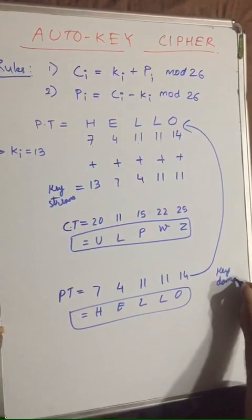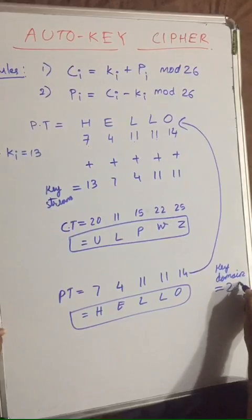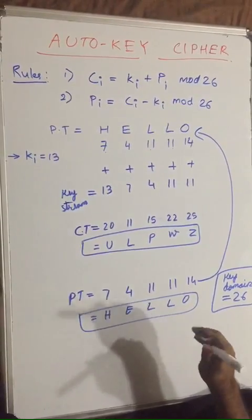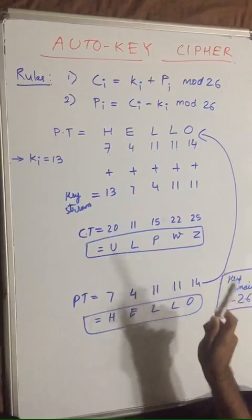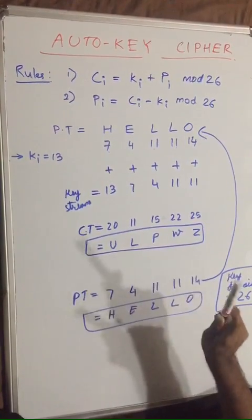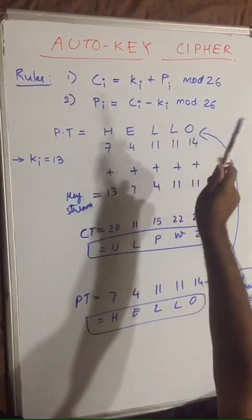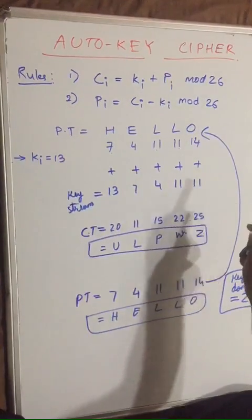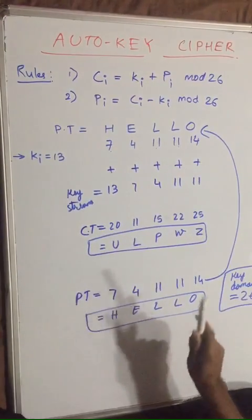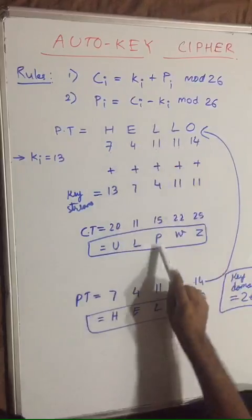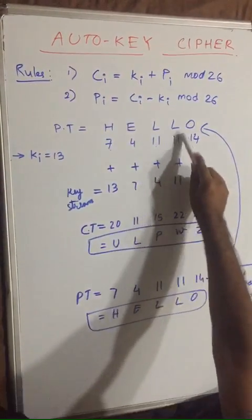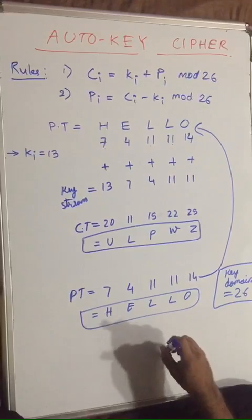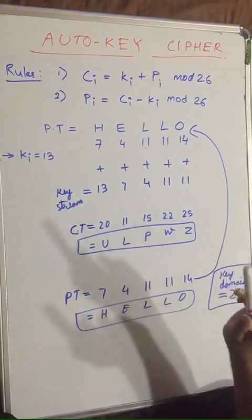I would like you to remember that key domain for auto-key cipher is 26. One more point: as we talked in our lecture on cryptography and its components, we discussed the difference between monoalphabetic and polyalphabetic. In monoalphabetic, for L we generated O as ciphertext. In polyalphabetic, for same letters you would be generating different ciphertext. Let us check: for both L's, for this L it is P and for this L it is W. This is the importance of polyalphabetic. So this was all about auto-key cipher, how to encrypt and decrypt using auto-key methods. Thank you.